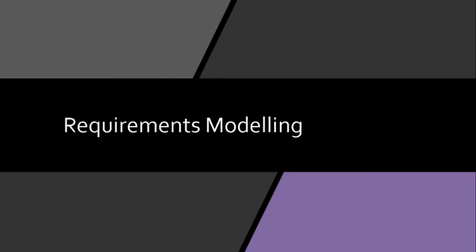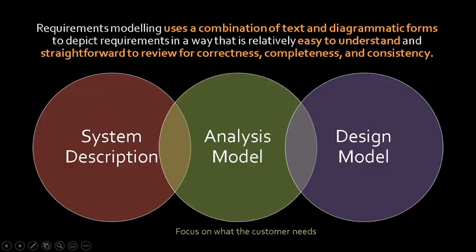We have already introduced requirements modeling in the previous lesson on requirements engineering as a task to organize and validate requirements. Requirements modeling is also called specs or specifications. These are created in the modeling phase through a task referred to as requirements modeling. Requirements modeling uses a combination of text and diagrammatic forms to depict requirements in a way that is relatively easy to understand and straightforward to review for correctness, completeness, and consistency.